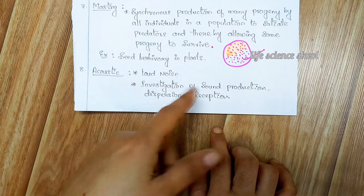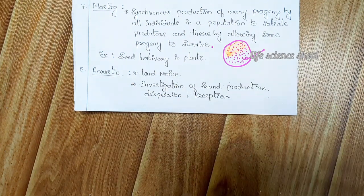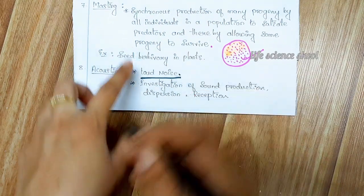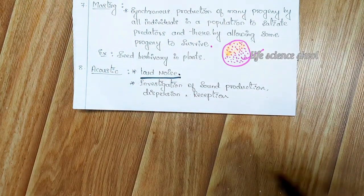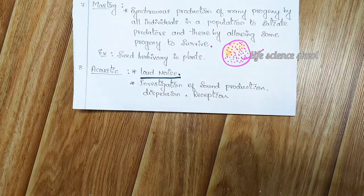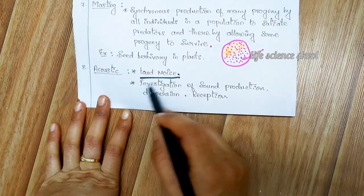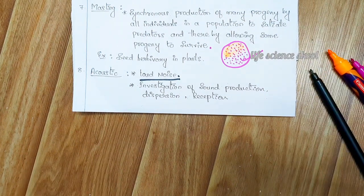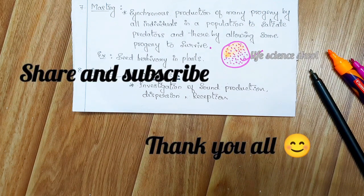The next type is accosting: some species make the predator feel they are dangerous by using loud noise, which shocks the predator. These are some of the other mimicry types. This is all about Batesian mimicry and Mullerian mimicry. I hope this video will be helpful. If you learned something, please share and subscribe. Thank you everyone.